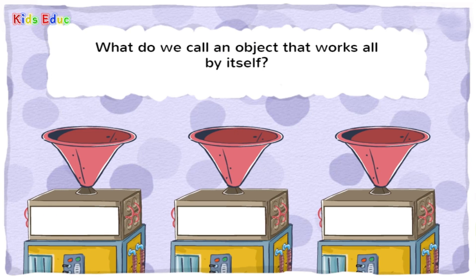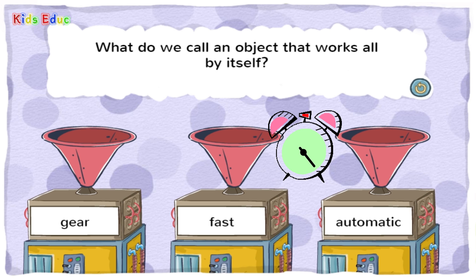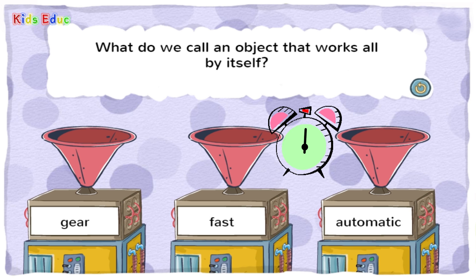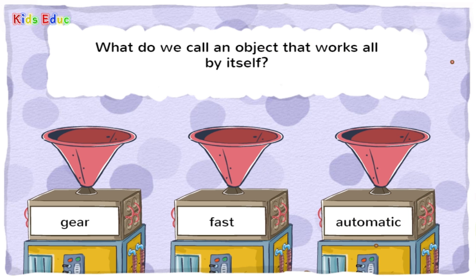What do we call an object that works all by itself? Gear. Fast. Automatic. — Automatic. That's right! When something is automatic, it works by itself.